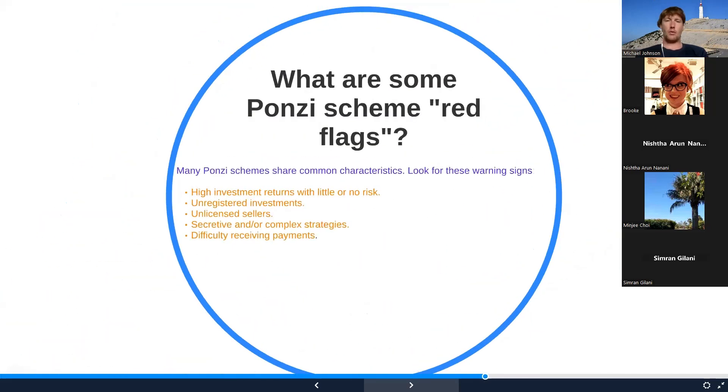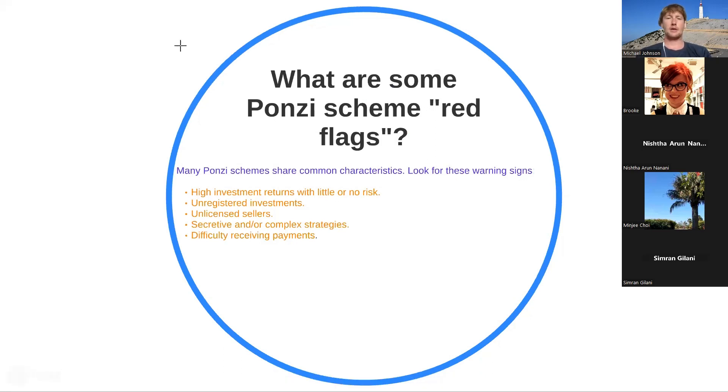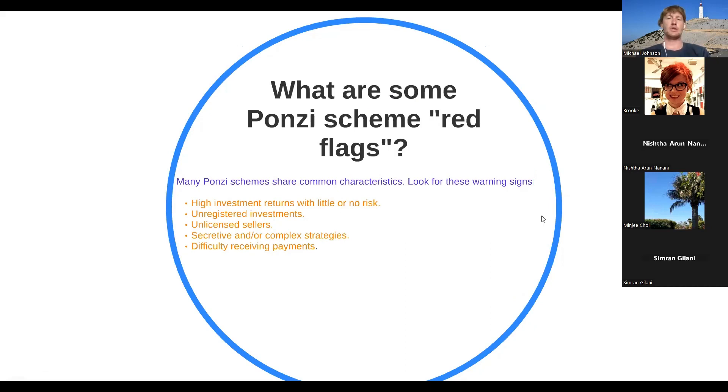So what are some Ponzi scheme red flags? Many Ponzi schemes share common characteristics. Look for these warning signs: high investment returns with little or no risk, unregistered investments, unlicensed sellers, secretive and or complex strategies, and difficulty receiving payments. Those are signs of a Ponzi scheme. So look out for those warning signs.